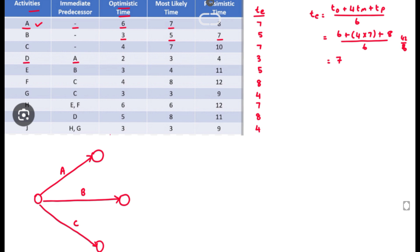For activity D, A is the predecessor activity, so we draw D coming from A. For activity E, B is the predecessor activity, so we draw E activity coming from B.